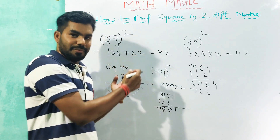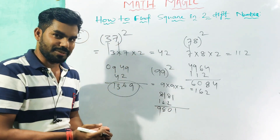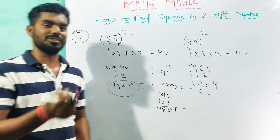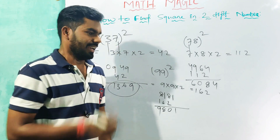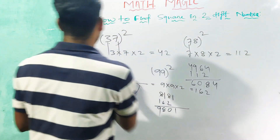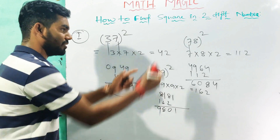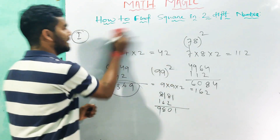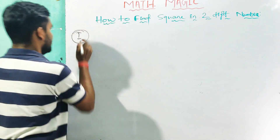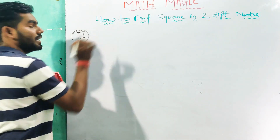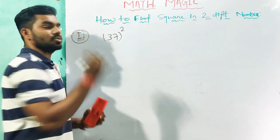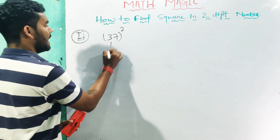Mathematics. Second step — second trick. Similarly, 37 squared, second trick.